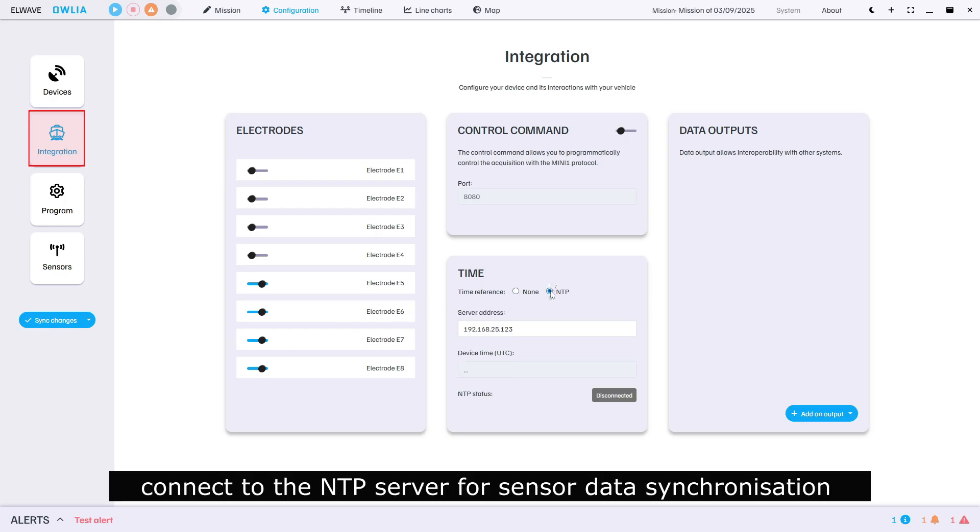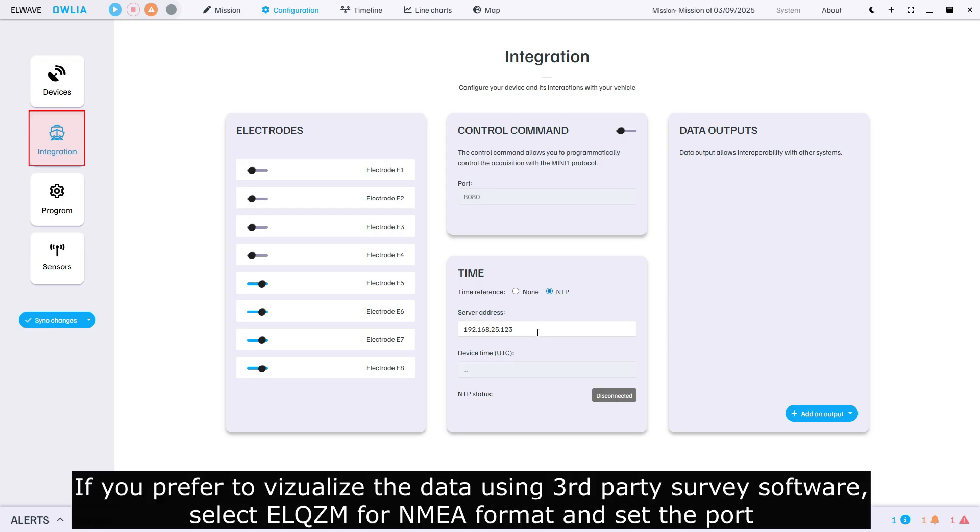Connect to the NTP server for sensor data synchronization. If you prefer to visualize the data using third-party survey software, select ELQZM for NMEA format and set the port.